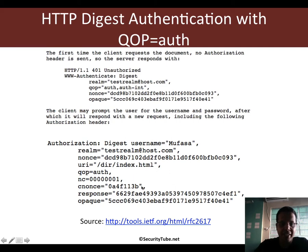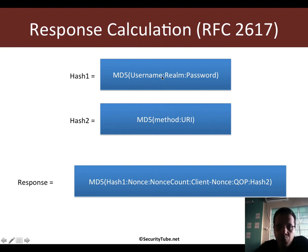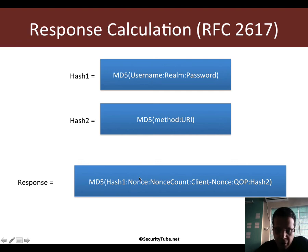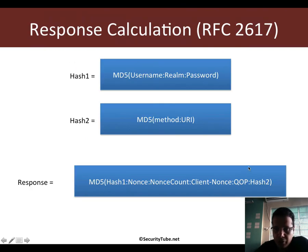As complicated as this looks, in reality it is very simple. Hash1 and hash2 are computed exactly the same way as before. Hash1 is an MD5 of username colon realm colon password, while hash2 is an MD5 of the method colon URI. The only change is in how the response is calculated: it's an MD5 of hash1 colon server-nonce colon nonce-count (the nc field, e.g., 00000001) colon client-nonce (cnonce) colon QOP (auth) colon hash2. We concatenate all of this and take an MD5 — that is the response.